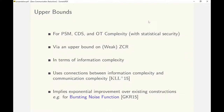All the upper bounds are obtained via an upper bound on ZCR in terms of information complexity, allowing a small constant statistical error. Our construction uses some recent advances in communication complexity literature.